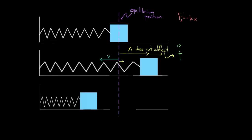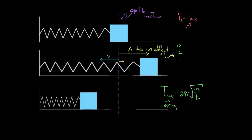So what does affect the period? The formula for the period of a mass on a spring is: T equals two pi times the square root of the mass divided by the spring constant k. That's the same spring constant from Hooke's Law and from the energy formula for a spring — the same k throughout.